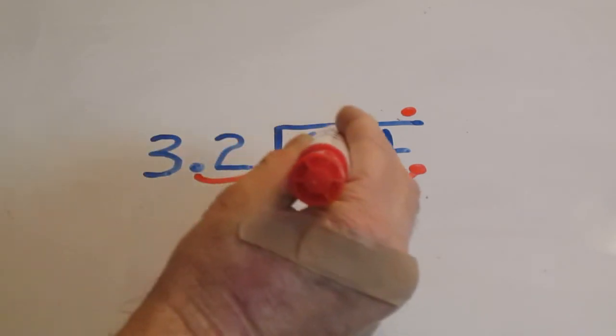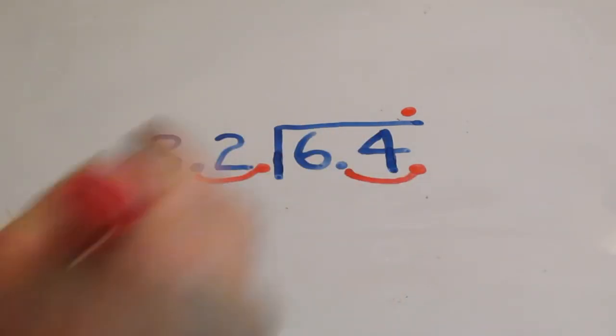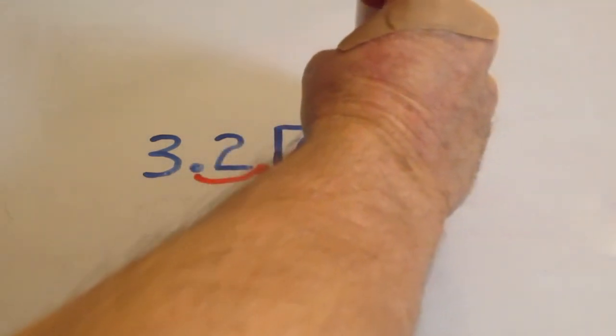Since 32 goes into 64 exactly two times, we put our 2 directly above the 4.